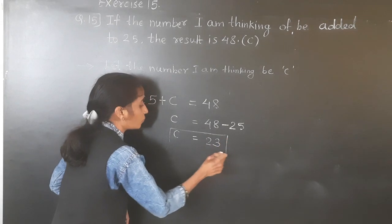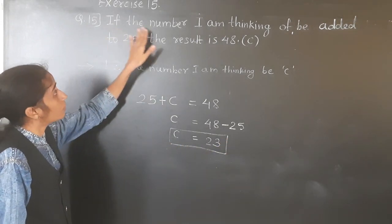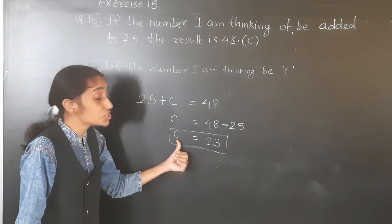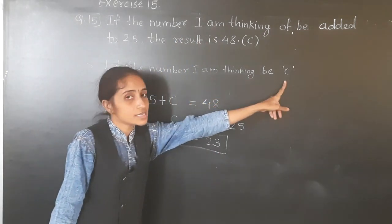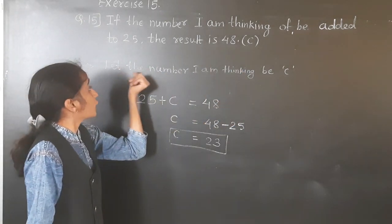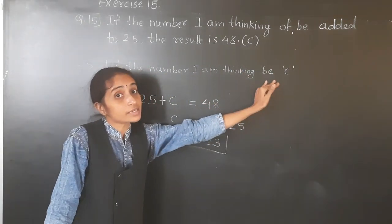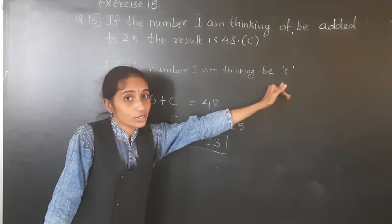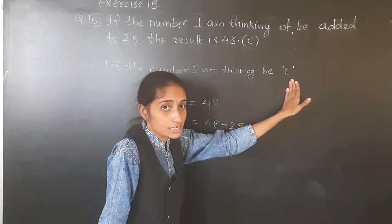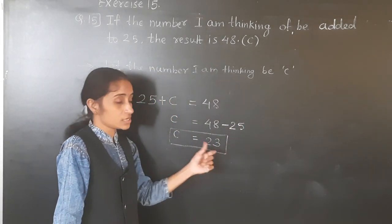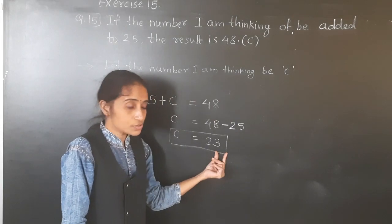We considered C for the number we are thinking. We got the value C = 23. So the thinking number is 23.